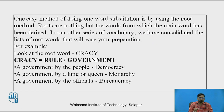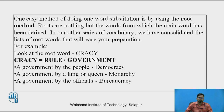I want to explain an easy method of learning one word substitution using the root method. Roots are the words from which the main word has been derived. For example, possible is a root word; if I add the prefix im-, it becomes impossible. In this series, we list out root words that will help make preparation easier.